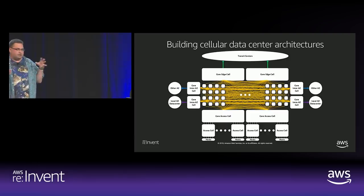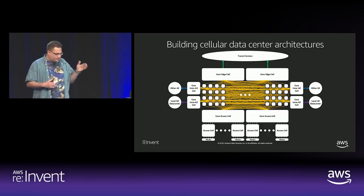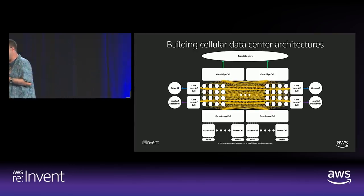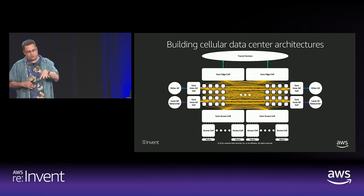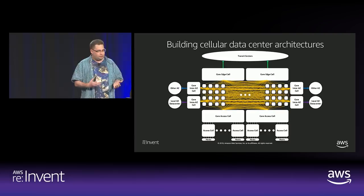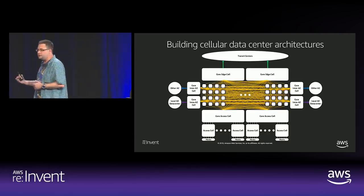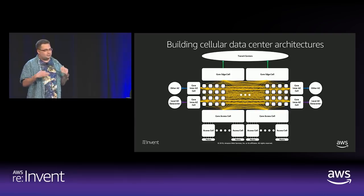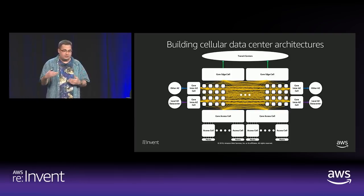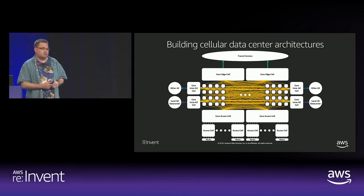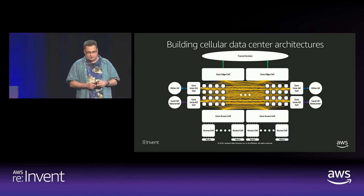One important thing: we don't like the concept of an active or standby router in the network. You don't want to wait for something to fail and then switch to another path — if you're not exercising it frequently, how do you know it's actually going to work? So a lot of the forwarding architecture is built on the basis that everything is active and forwarding traffic. We don't want the surprise of expecting something to work and finding it doesn't.